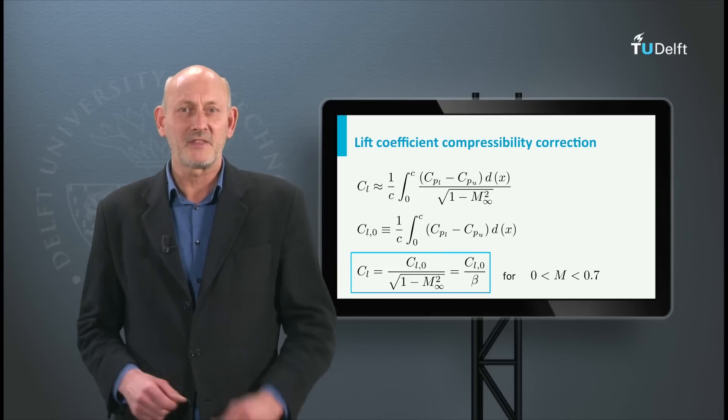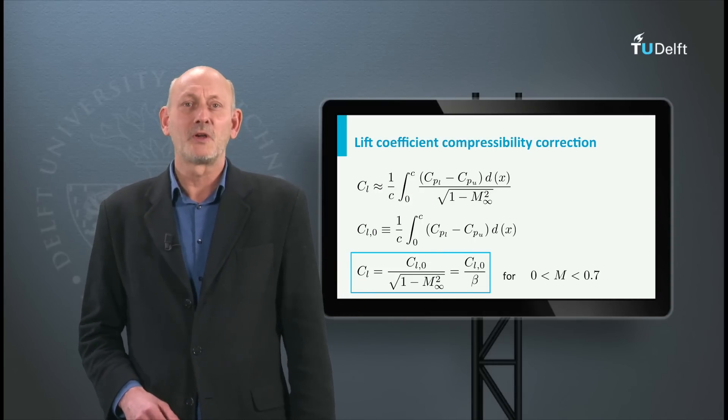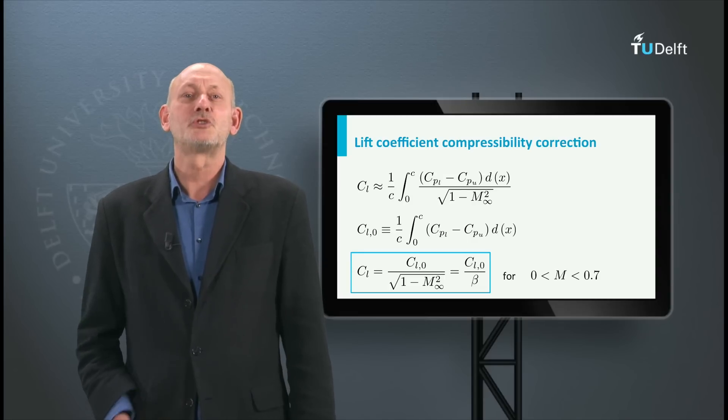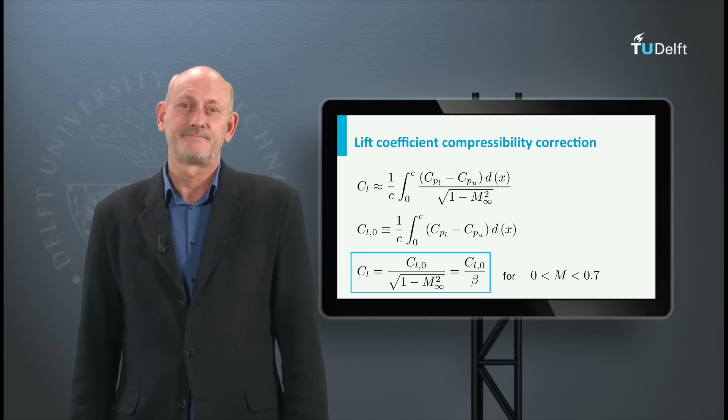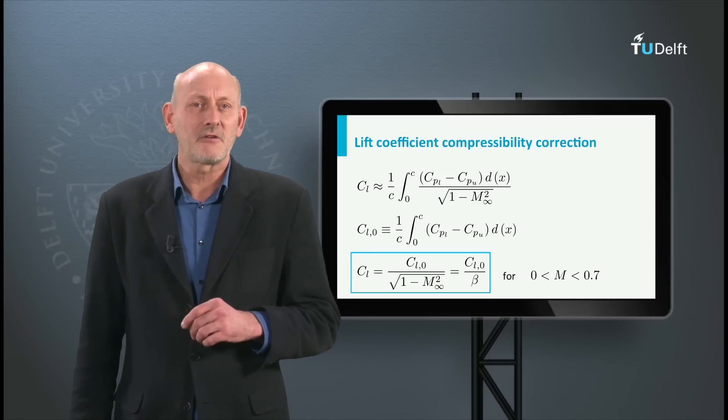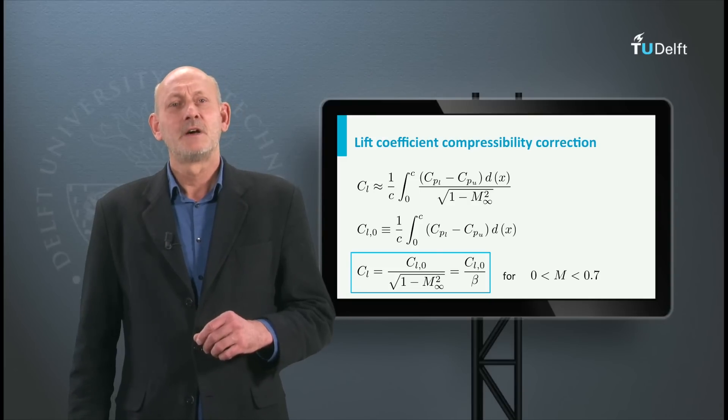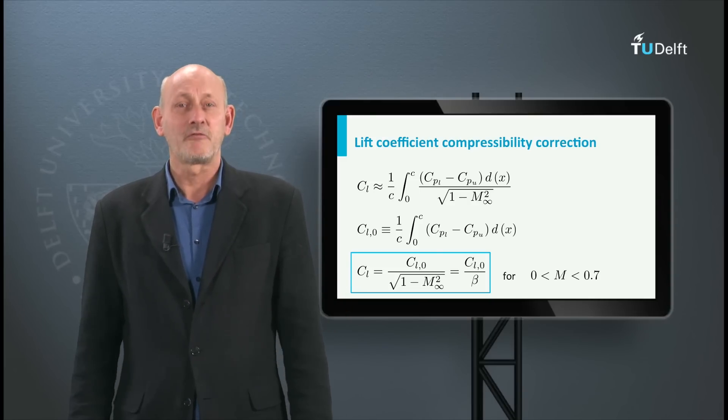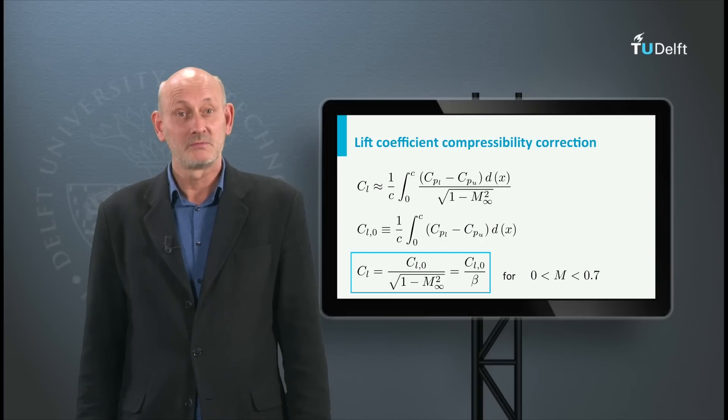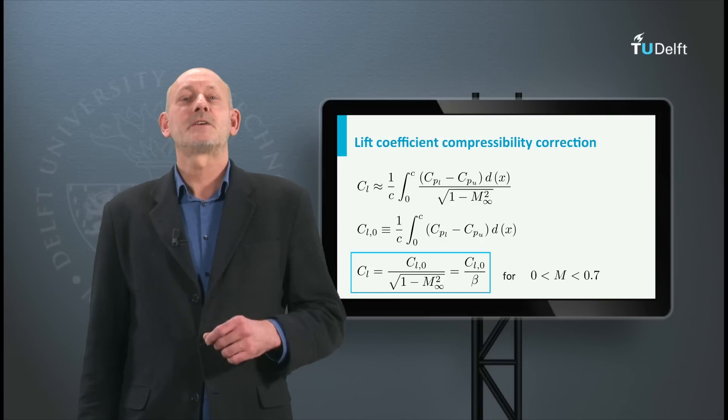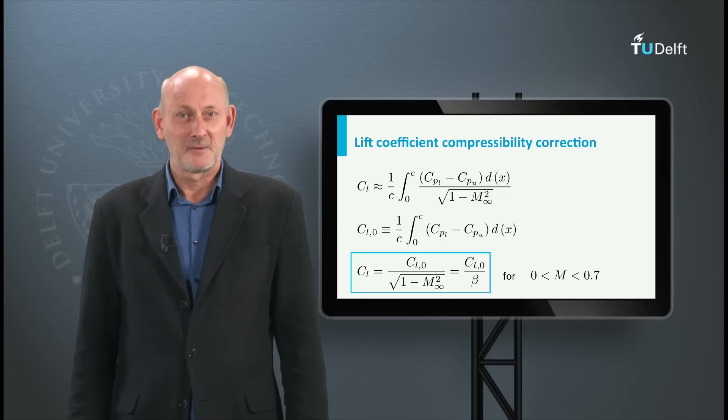Other more sophisticated methods need the pressure distribution in terms of Cp to correct. To get an idea of the increase of Cl with Mach number, for a Mach number of 0.7, a Cl of 1 will increase with 40% to 1.4. Next lecture we will explore the critical Mach number.